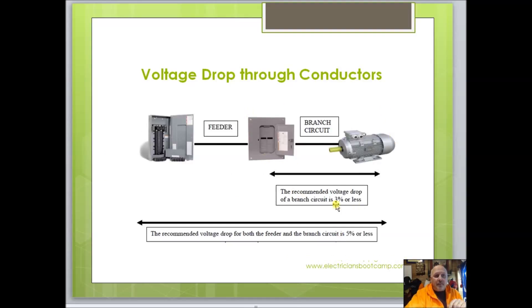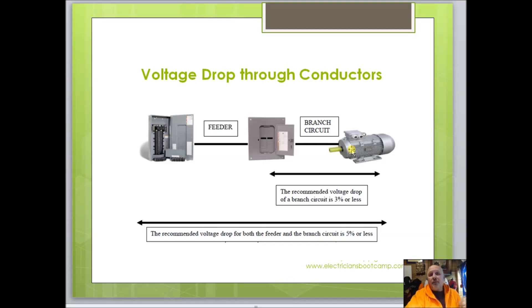Just to reiterate: three percent. If you didn't have a sub-panel, you'd be going from your main panel to your motor — still three percent. The five percent applies from a panel to the furthest device or motor away from your panel.